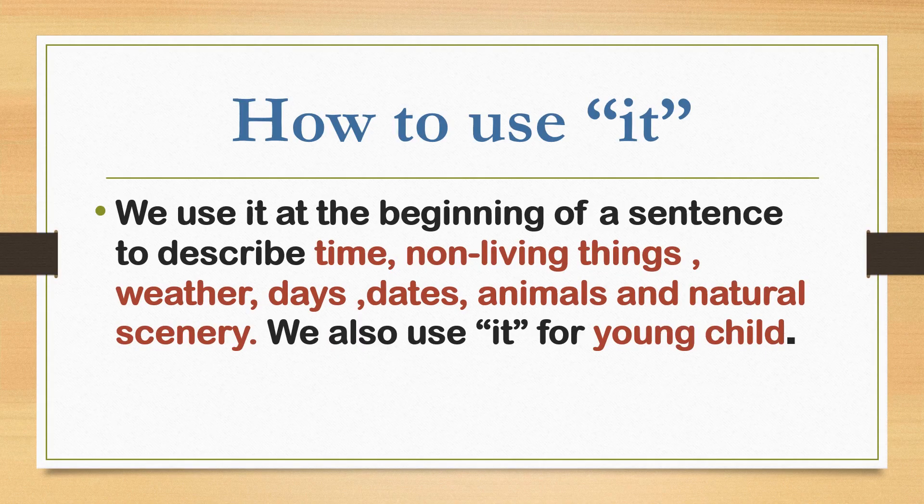We use 'it' at the beginning of a sentence to describe time, non-living things, weather, days, dates, animals, and natural scenery. We also use it for a young child.